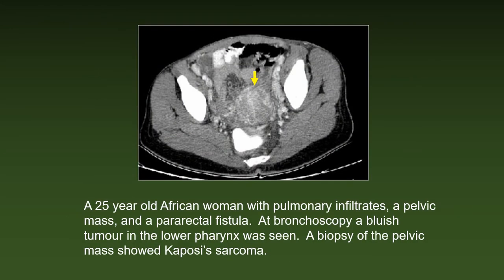A 25-year-old African woman with pulmonary infiltrates, a pelvic mass, and a pararectal fistula. At bronchoscopy, a bluish tumor in the lower pharynx was seen, presumably KS. A biopsy of the pelvic mass showed Kaposi's sarcoma.